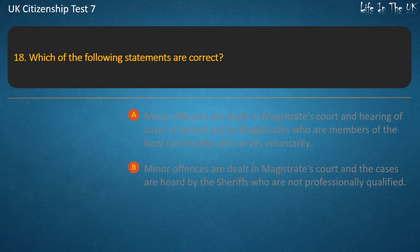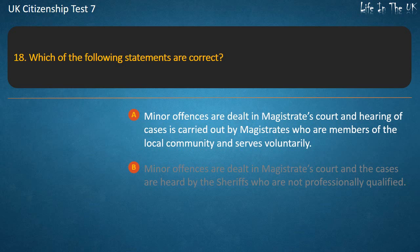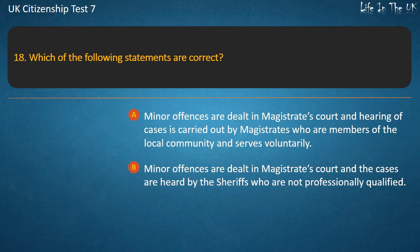Question 18: Which of the following statements are correct? Options: Minor offences are dealt with in magistrates court and hearing of cases is carried out by magistrates who are members of the local community and serve voluntarily; Minor offences are dealt with in magistrates court and the cases are heard by sheriffs who are not professionally qualified. Answer: Minor offences are dealt with in magistrates court and hearing of cases is carried out by magistrates who are members of the local community and serve voluntarily.